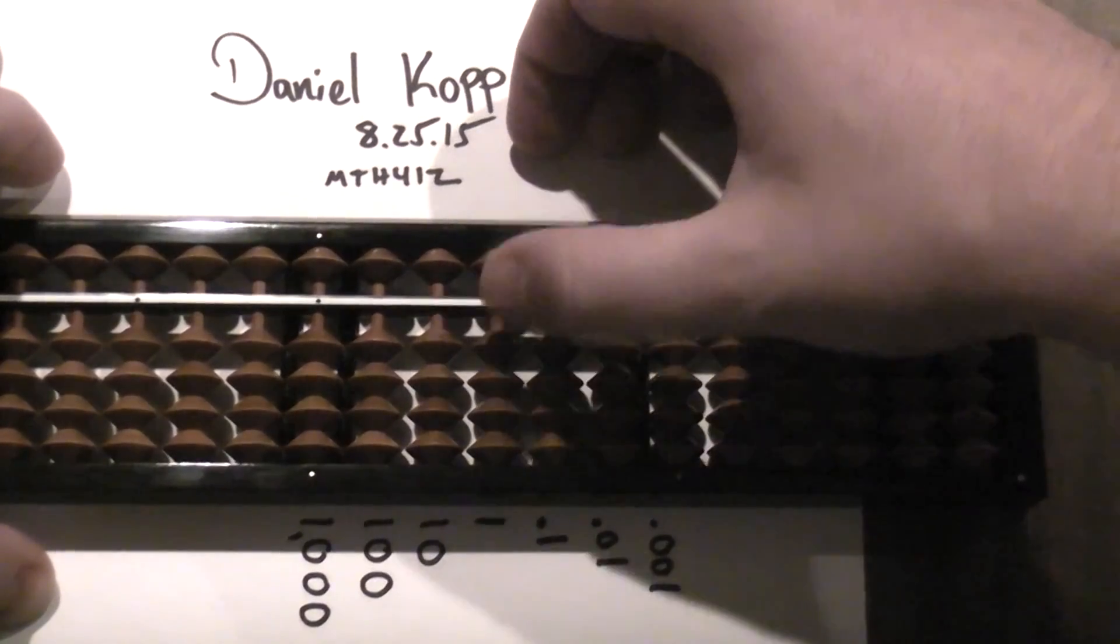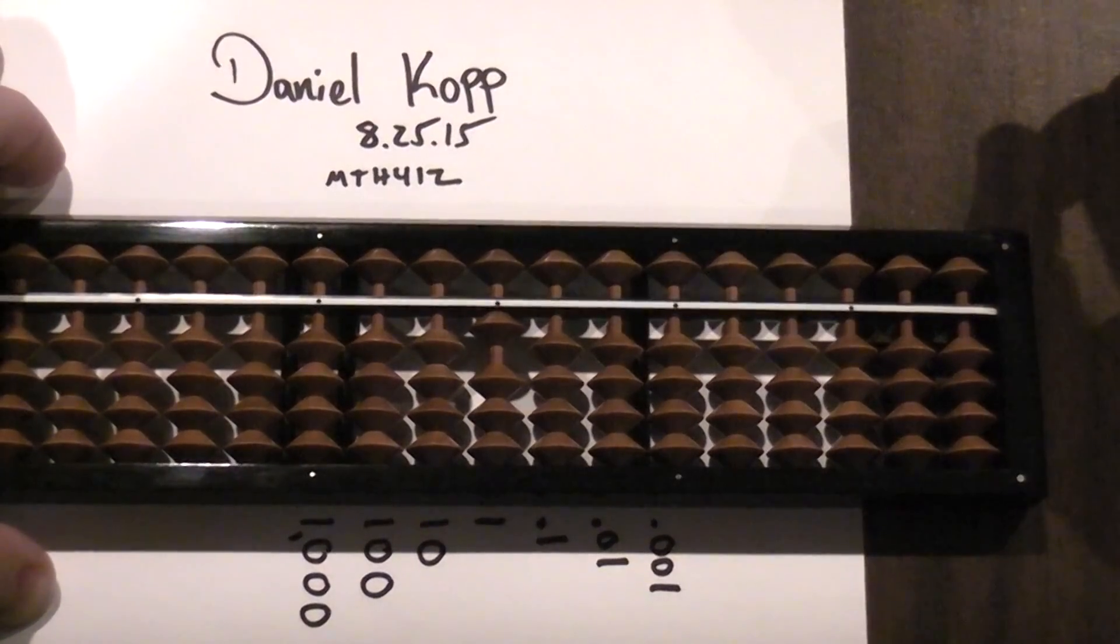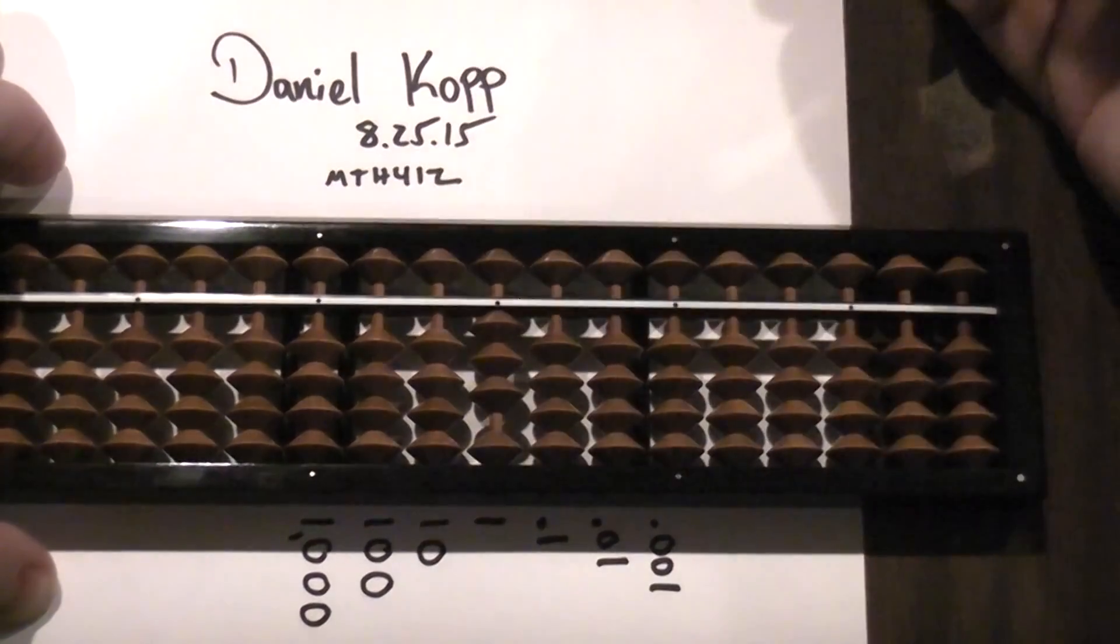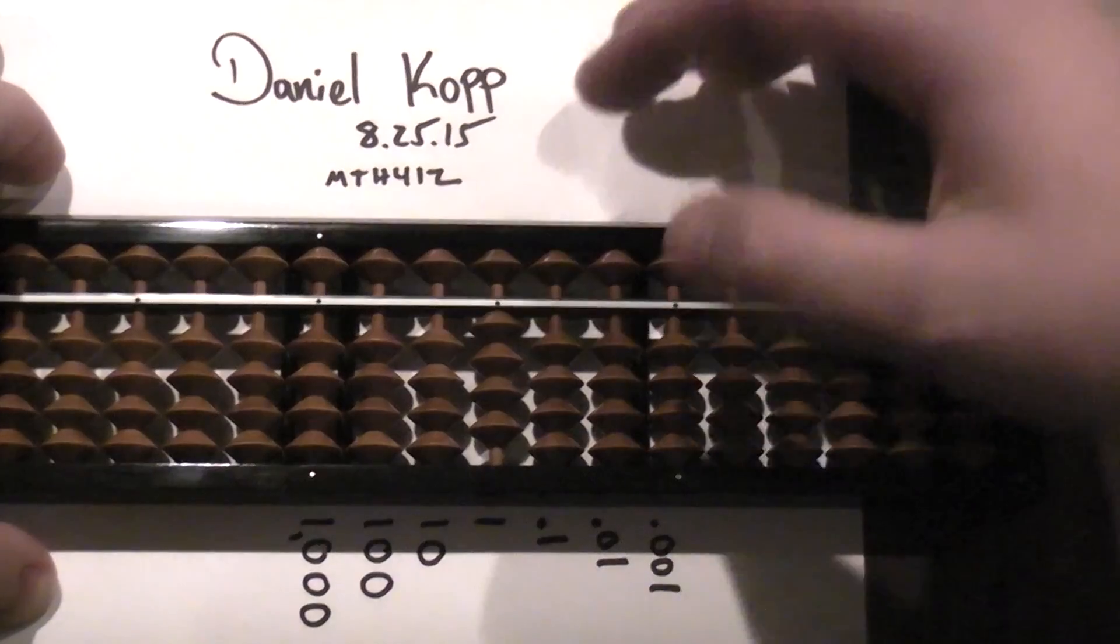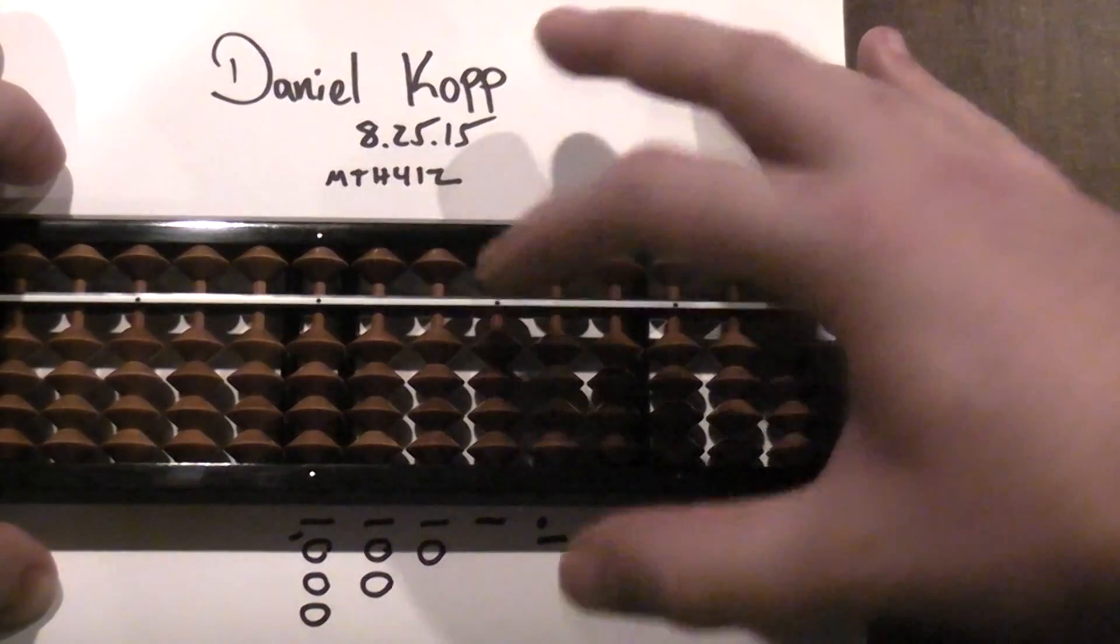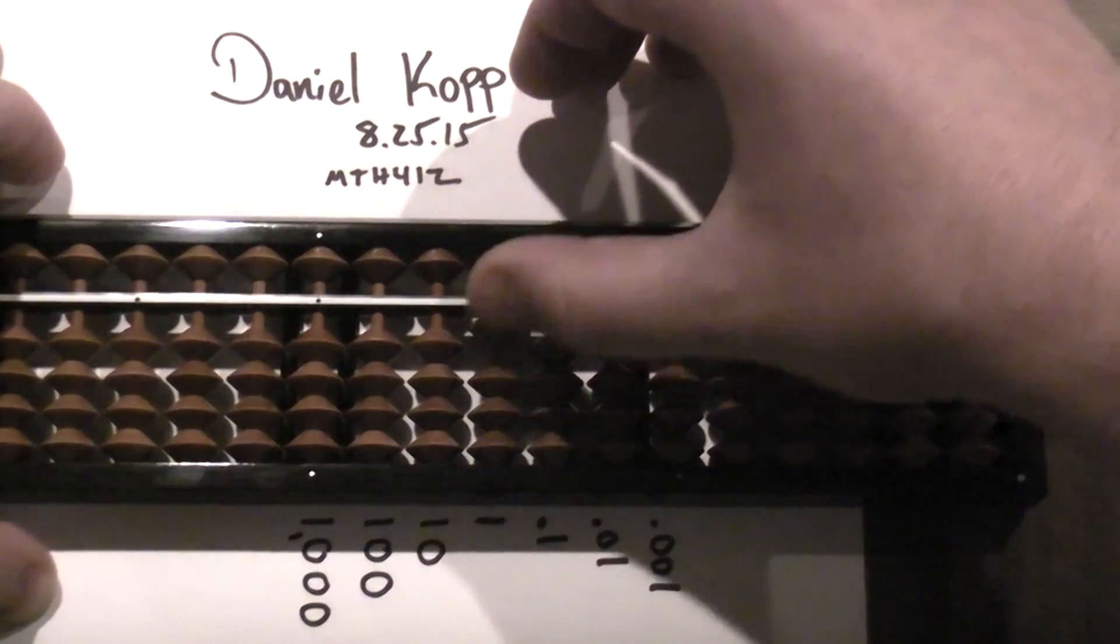We go to our ones column and move up one bead. That's one. Here's two, here's three, here's four. To do five, we move down the heavenly bead and subtract these four. That's five, six, seven, eight, nine. And to go to ten, we have to go over to the next column.